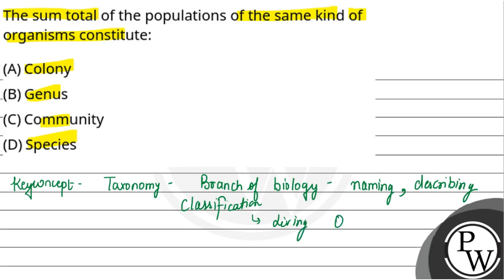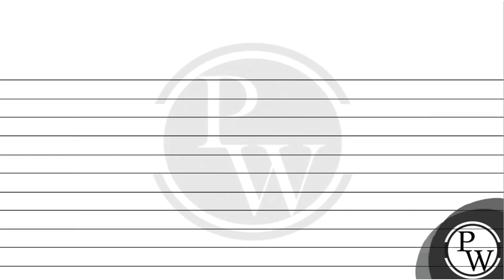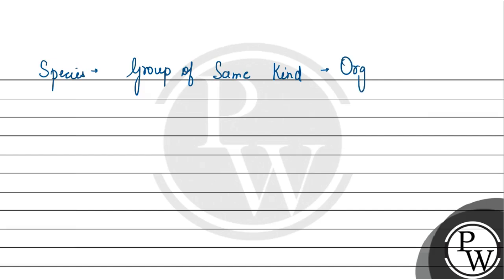If we talk about plants, they are included in living organisms. Now, if we discuss the same kind of organism, that refers to the concept of species.